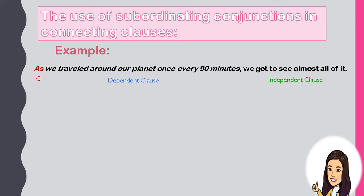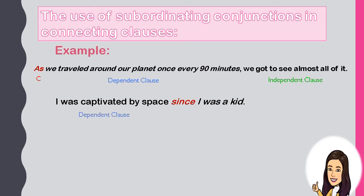When we say complex sentence, it is formed of two clauses joined with a subordinating conjunction — the dependent clause and the independent clause. Next example: 'I was captivated by space since I was a kid.' 'I was captivated by space' is the independent clause. 'Since' is the subordinating conjunction. 'I was a kid' is the dependent clause. Notice that we use the conjunction between the two clauses.